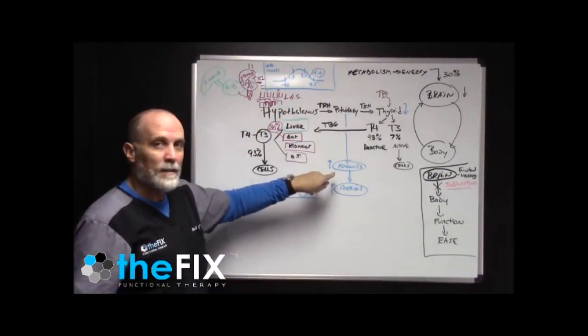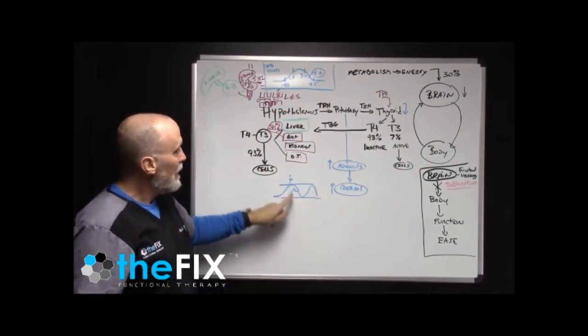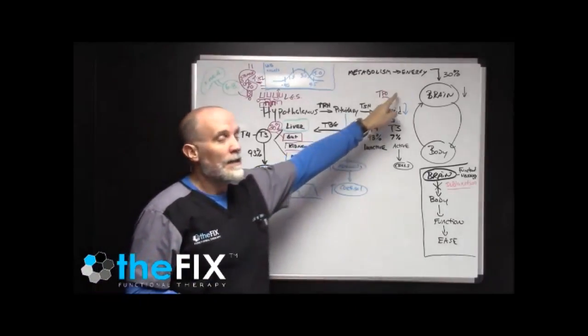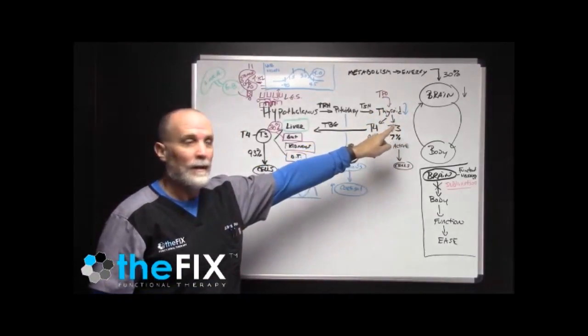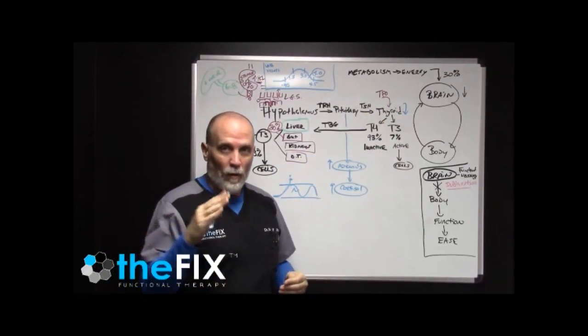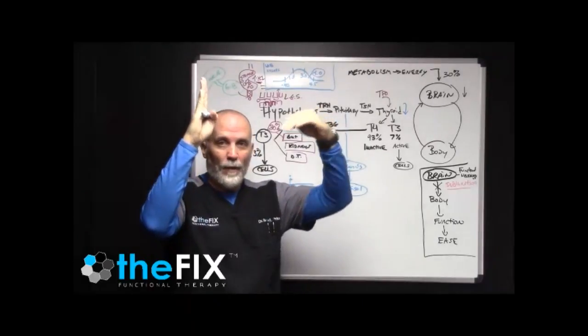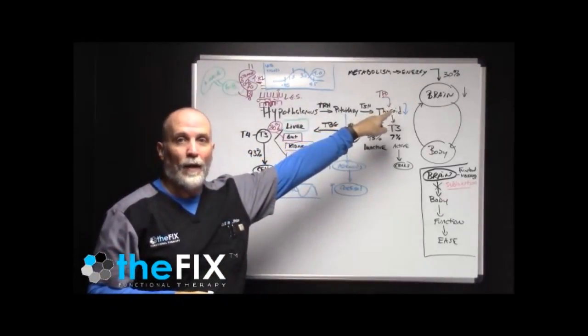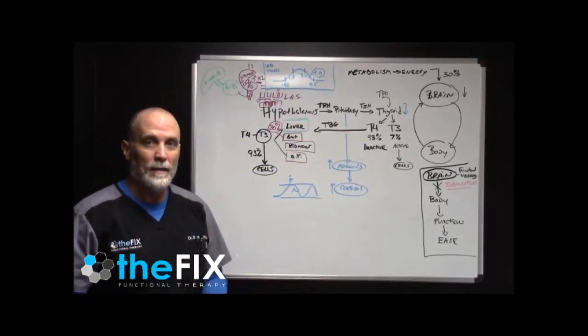When blood sugar and cortisol go up, that pulls thyroid function down. So chronic stress can cause elevated blood sugar, which could lead to diabetes. It can also cause decreased thyroid function. Again, this is not a thyroid issue. This is the body balancing itself out. Cortisol and blood sugar go up, thyroid goes down. They counterbalance each other. You can have hypothyroid symptoms because of chronic stress.